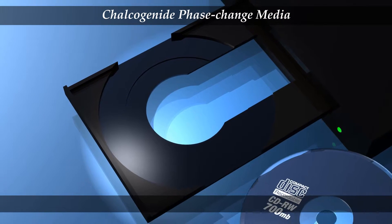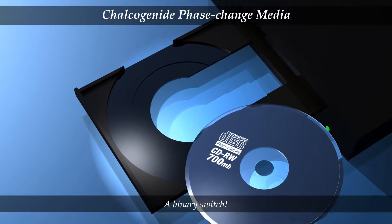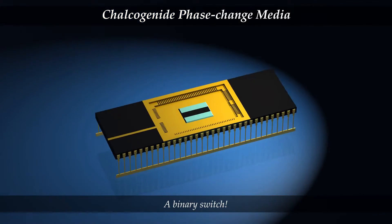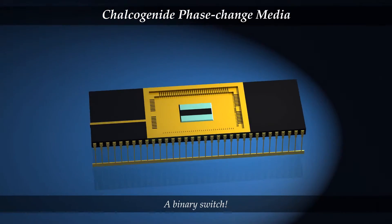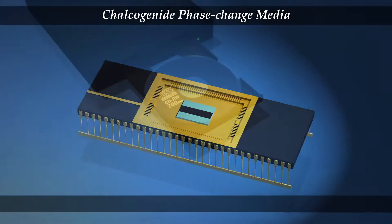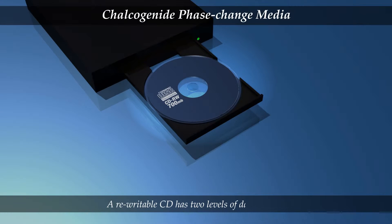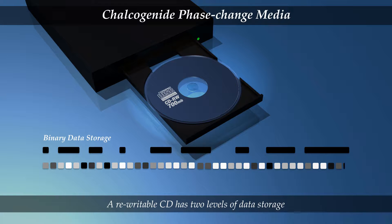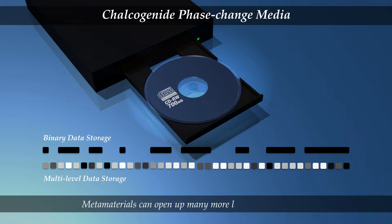You have already used this binary switching behaviour if you have ever used a rewritable CD or phase change RAM. A CD uses two levels of data storage, but by using sophisticated laser systems we can go beyond this and allow storage with many more levels, significantly increasing the amount of data on a disk.